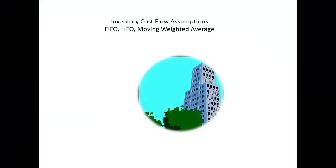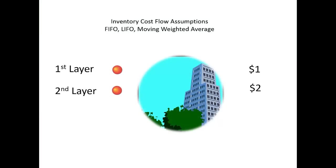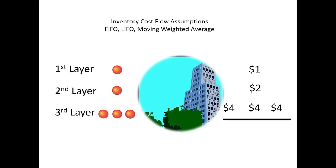For example, let's assume a company were to purchase one gumball for $1, one for $2, then three more at $4 each — a total purchase cost of $12 for these last three. The cost of goods available for sale during the period would be $15, made up of three different inventory cost layers: a $1 layer with one unit, a $2 layer with one unit, and a $4 layer with three units.